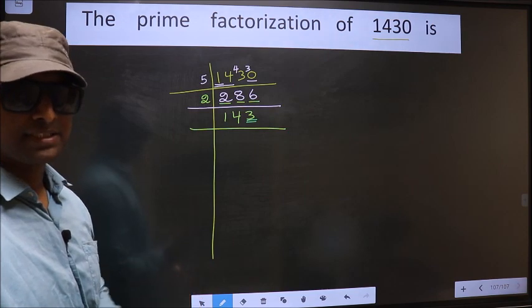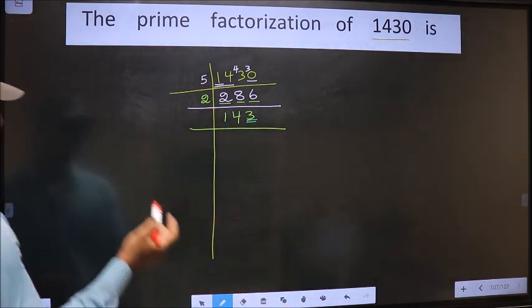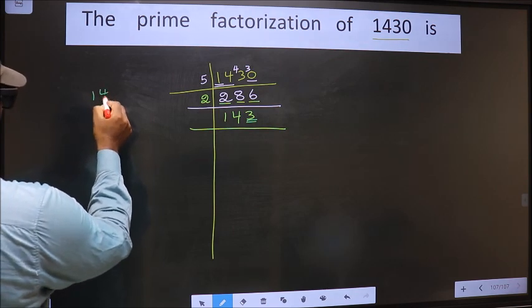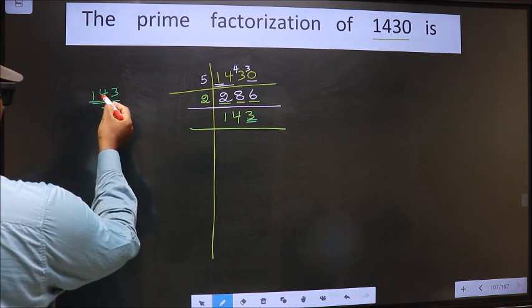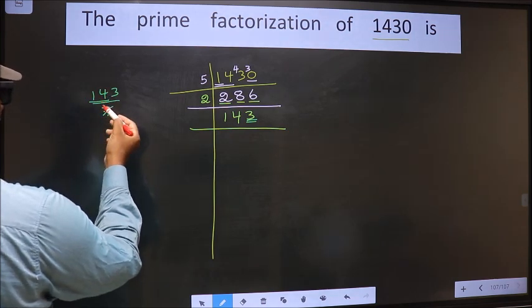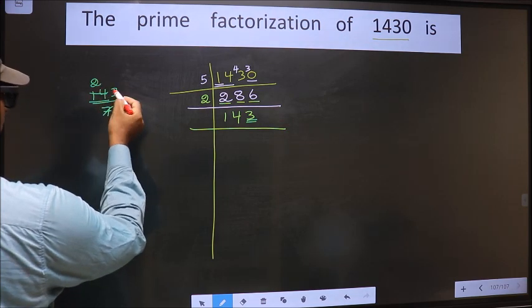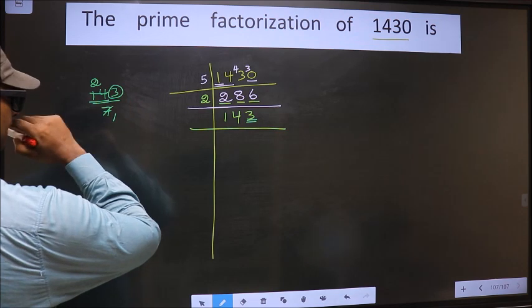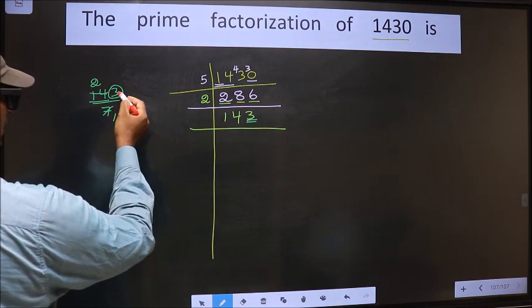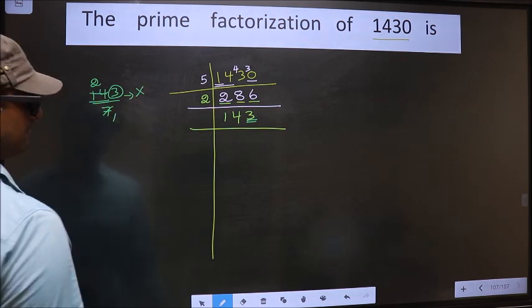Next prime number 7. Let us check divisibility by 7 in this way. That is 143 by 7, 7 ones. Here we have 14. When do we get 14 in 7 table? 7 times 2 is 14. We are left with the number 3. We don't get 3 in 7 table. So the number 3 is left. Since 3 is left, this number is not divisible by 7.